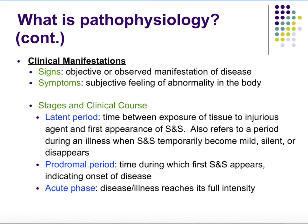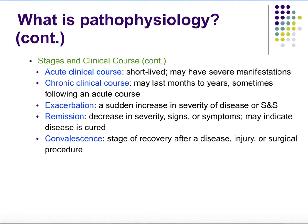Then you have the acute phase — this is when the disease reaches its full intensity, when you're stuck in bed, really tired, and feel at your worst. We can also look at other categories: acute clinical course means the disease course is going to be short-lived, so it doesn't last very long. You may have very severe manifestations, but it's going to have a shorter lifespan. Chronic clinical course means it's going to last much longer — months or even years — and sometimes it will actually follow an acute course.